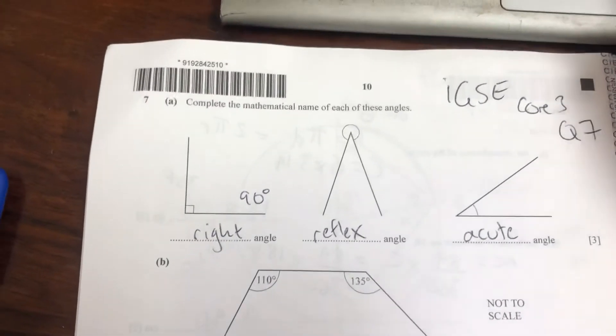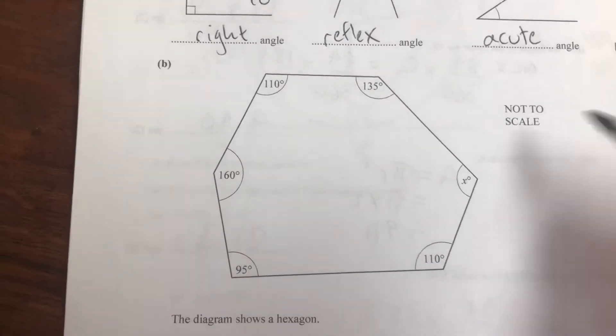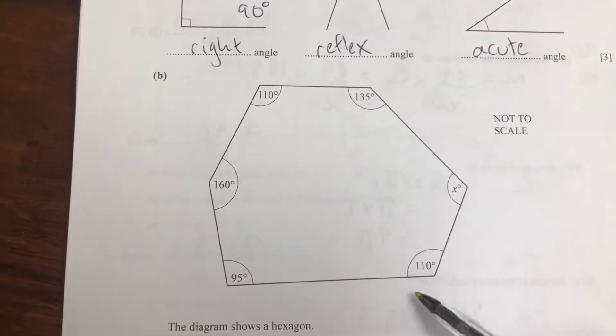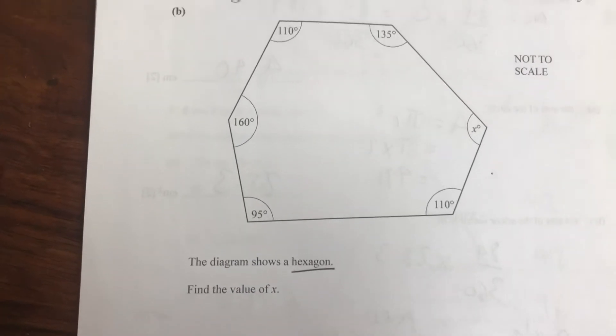Now we're going to look at a hexagon. It's not to scale and it's not regular. It is still a one, two, three, four, five, six-sided shape. It tells us it's a hexagon. We're going to find the value of X.